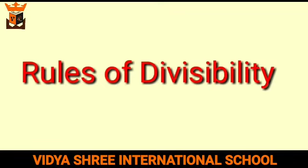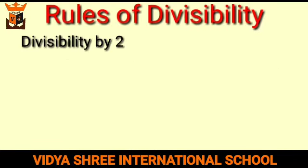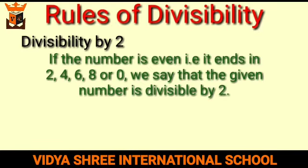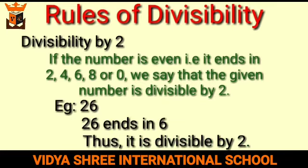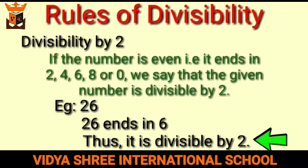The first rule is divisibility by 2. If the number is even, i.e., it ends in 2, 4, 6, 8 or 0, we say that the given number is divisible by 2. For example, 26 — the number 26 ends in 6, thus it is divisible by 2.